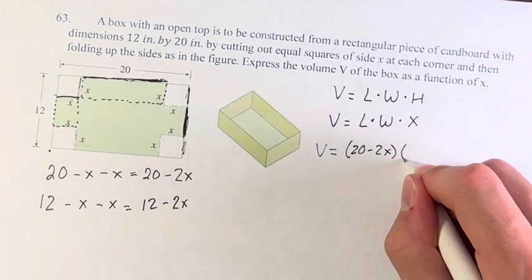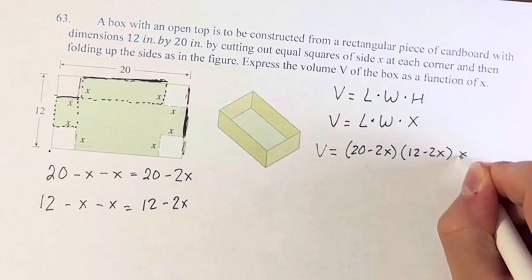So this is 20 minus 2x times 12 minus 2x times x.